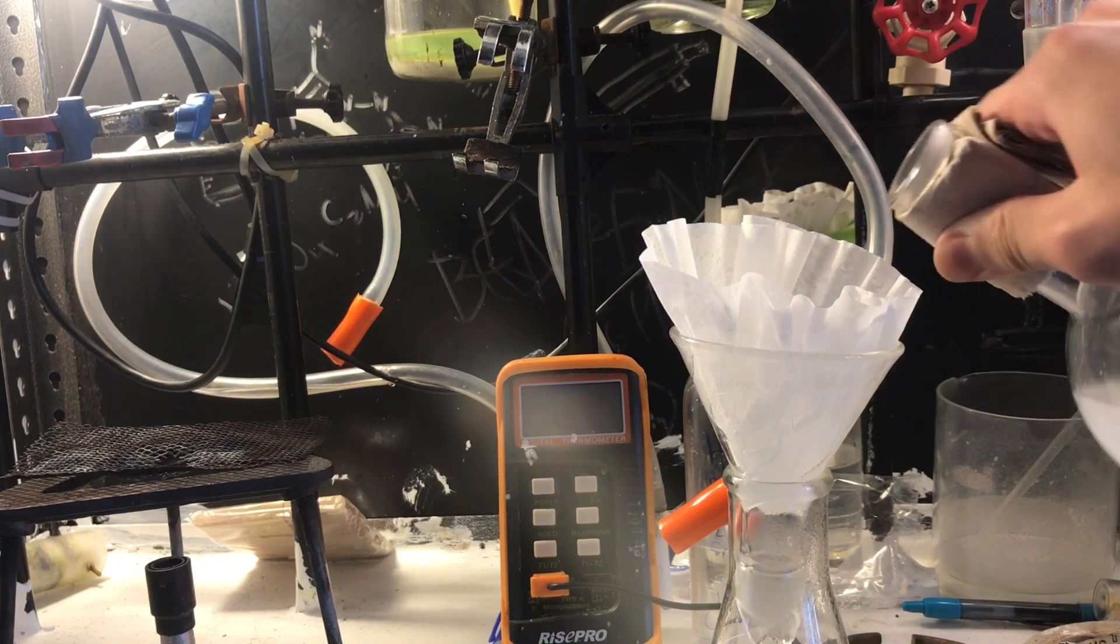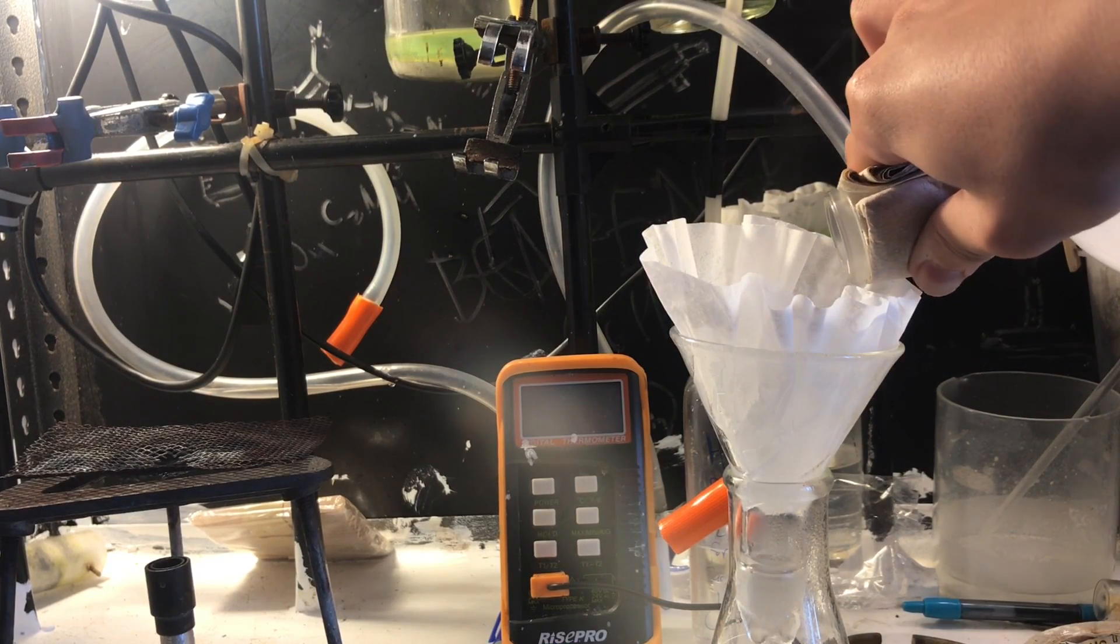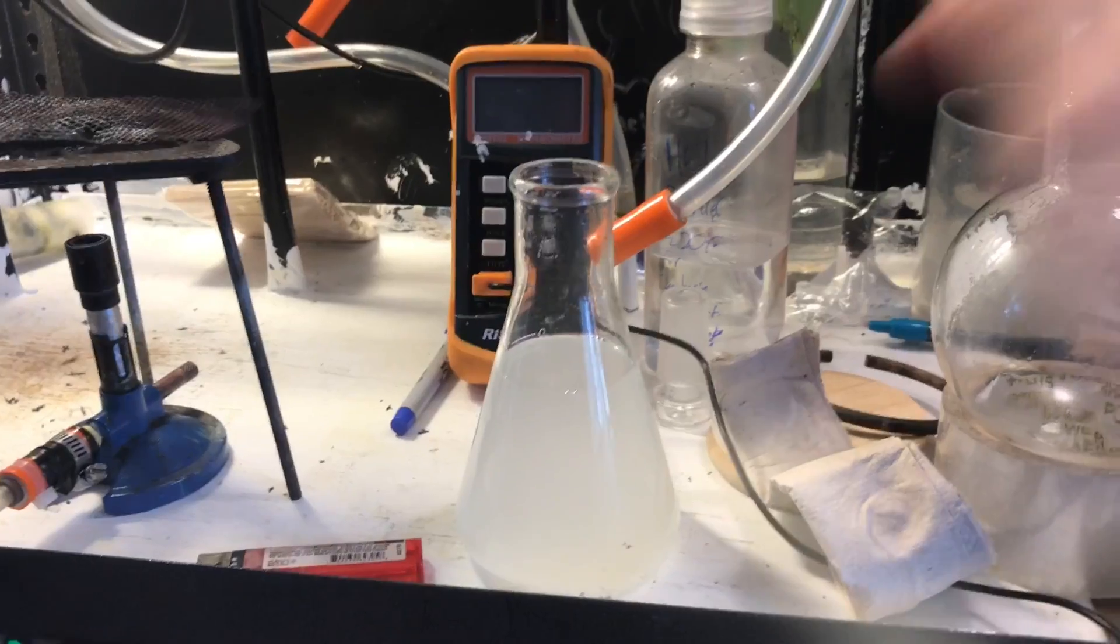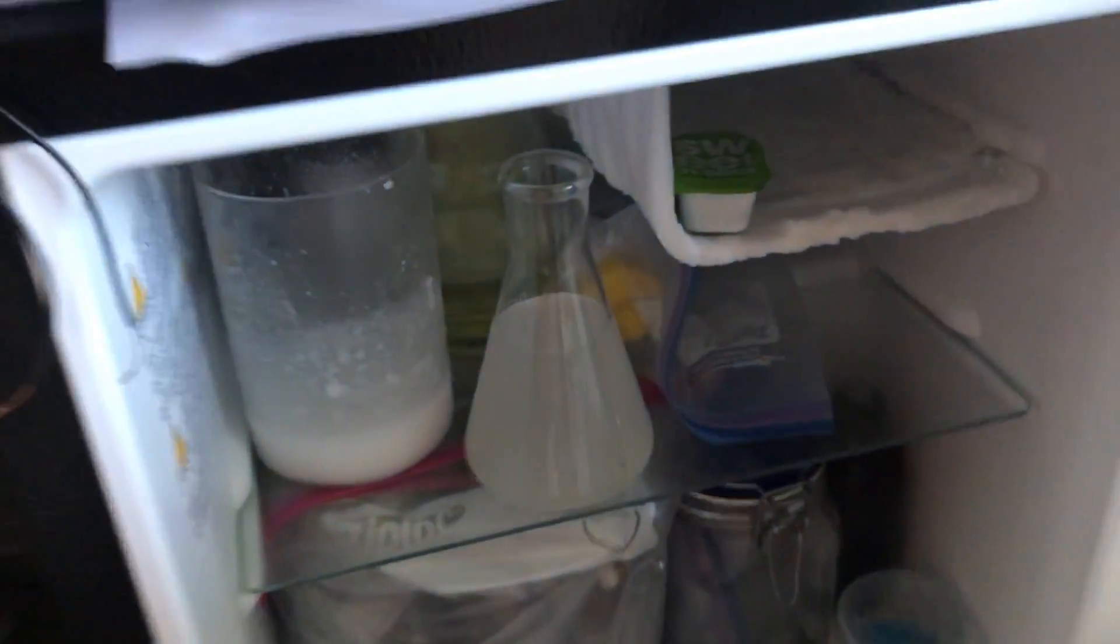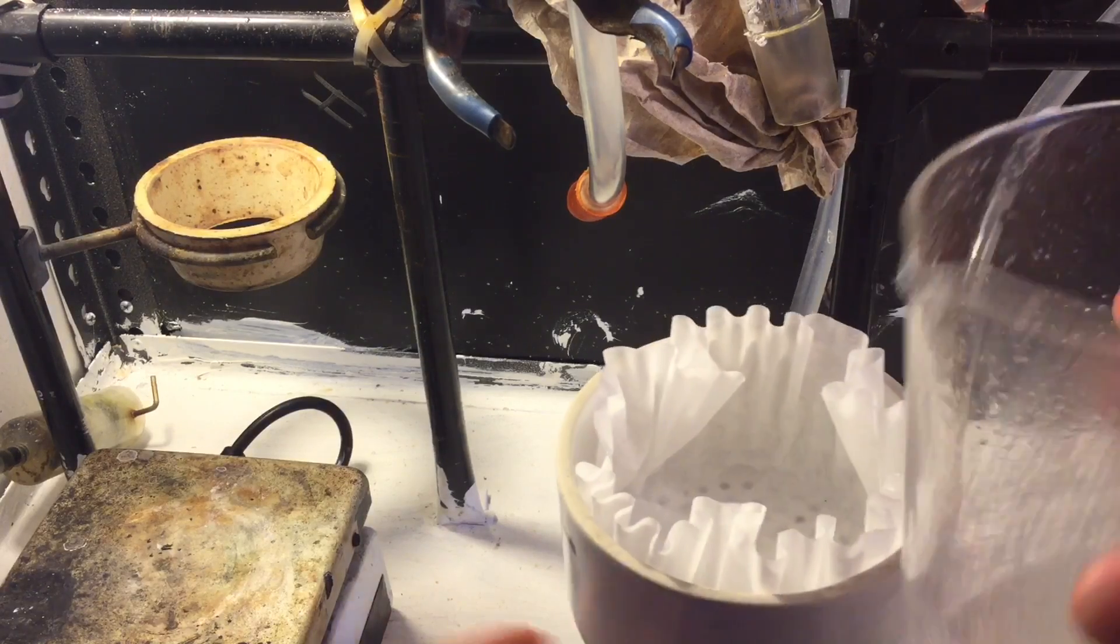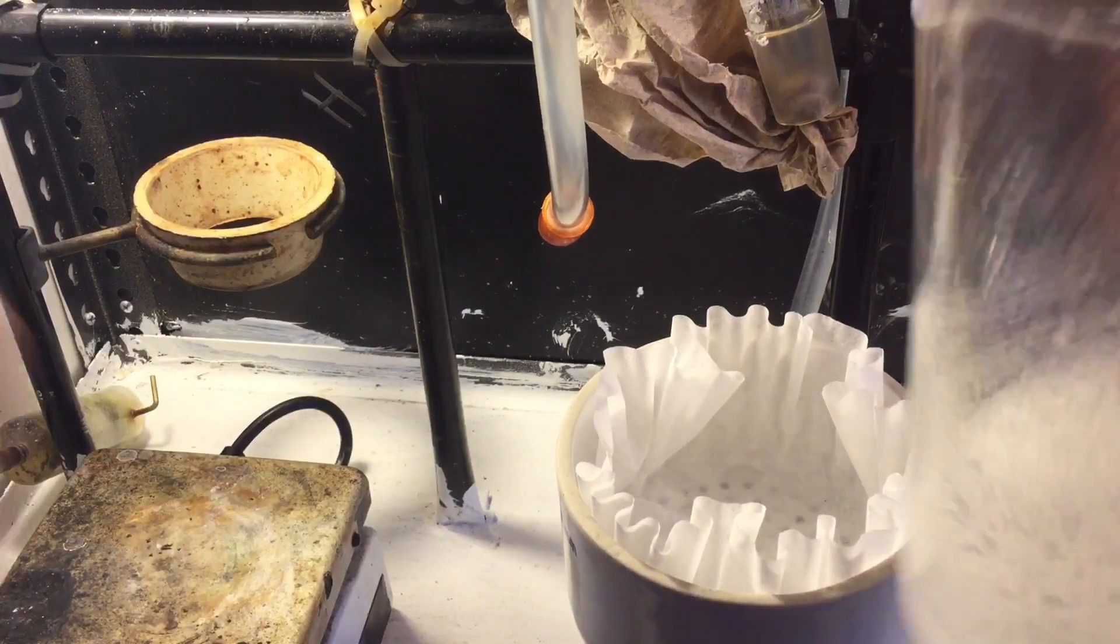Just filter it, and that's basically it, let it crystallize. However, as you can see, I put mine in the refrigerator, but it did not crystallize. There was too much water in it still, so I just ended up boiling it down into a sludge, and then just filtering that sludge for the sodium bisulfate crystals.